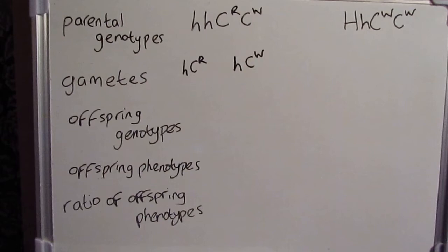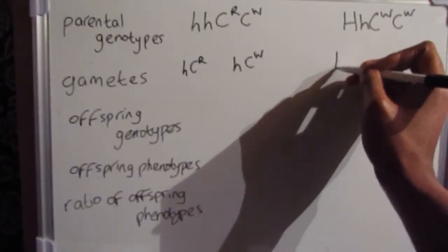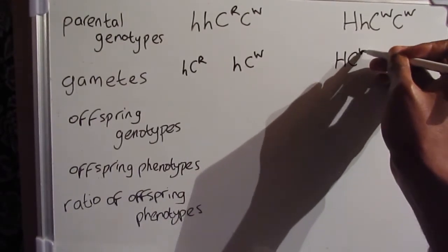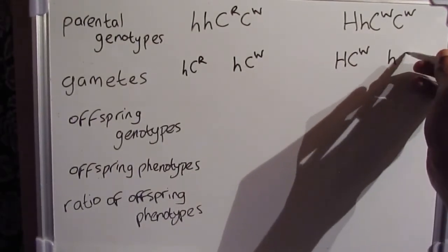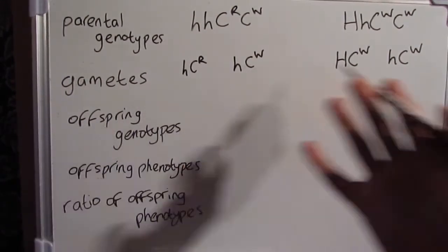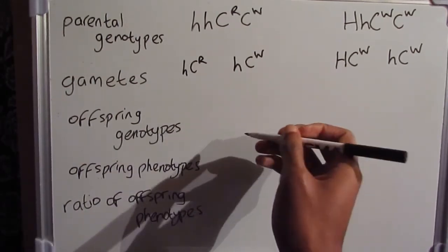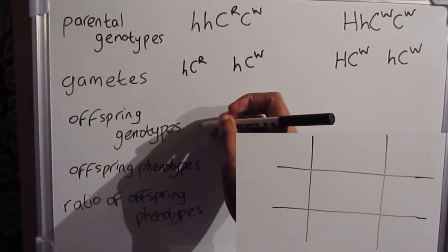So two gametes come in from one parent there, and from the other hornless white parent, again it should be only two gametes potentially. One capital H and C superscript W, and one lowercase h and C superscript W. So those are your four gametes that are coming from your parents.